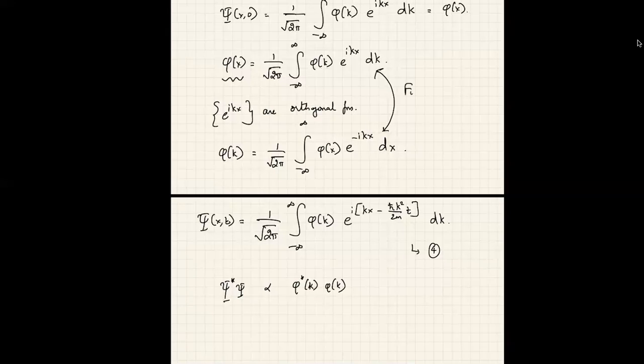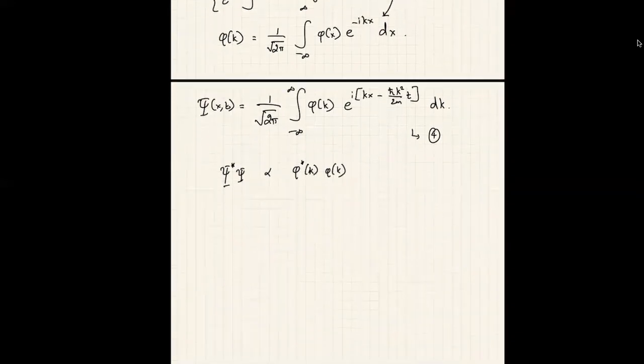As a curious mathematical fact, if two functions are related by φ(x) = ∫φ(k)e^(ikx)dk and φ(k) = ∫φ(x)e^(−ikx)dx, they are said to be Fourier transforms of each other. So φ(k) is the Fourier transform of φ(x), and φ(x) is the inverse Fourier transform of φ(k).